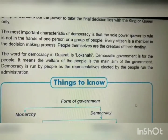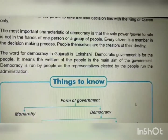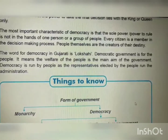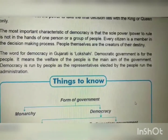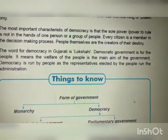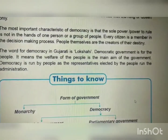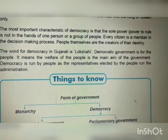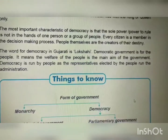Democratic government is for the people, meaning the welfare of the people is the main aim of the government. Democracy is run by people, as the representatives elected by the people run the administration. In short, it is said that democratic government is for the people, of the people, and run by the people.